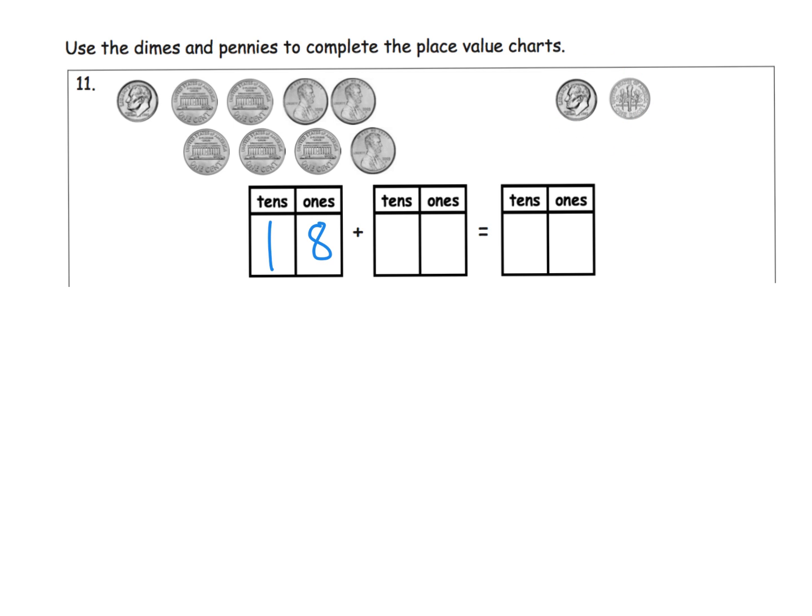And then over here, I see that we have two 10s and no ones. So what is our total? Well, how many 10s do we have? We have one, two, three 10s. So we have three 10s. And then how many ones do we have? We still have these eight ones. So 18 plus 20 is equal to 38.